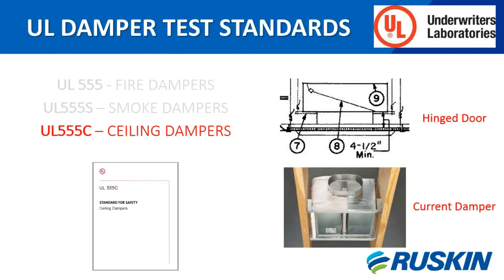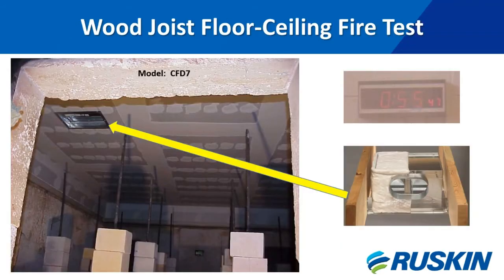Ceiling dampers are used in specific fire resistance design alternatives. Some floor-ceiling or roof-ceiling design specifications include one or more ceiling radiation dampers covered by this method of evaluation, and are generally tested along with the design constructed in accordance with the standards for fire tests of building construction and materials. For the UL 555C fire test, the damper is installed in a current UL fire resistance floor-ceiling or roof-ceiling assembly. The actual installation method is determined by the manufacturer of the damper.